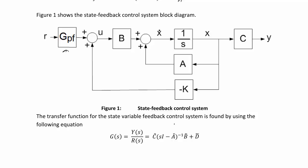The transfer function for the state variable control system is found by using the following equation. g of s is equal to y of s over r of s, which is equal to c tilde si minus a tilde inverse b tilde plus d tilde.